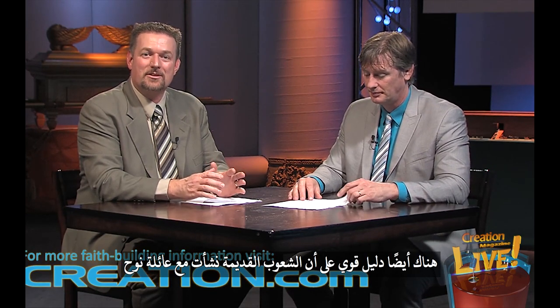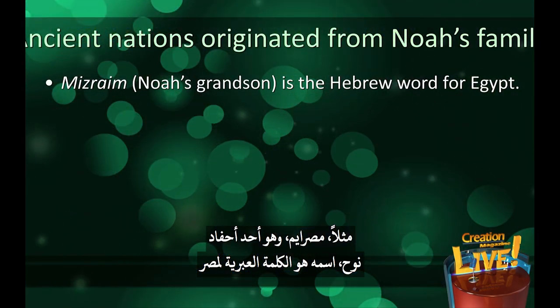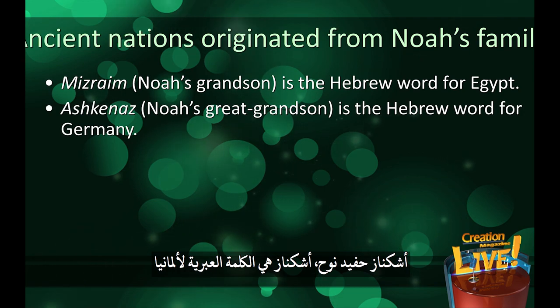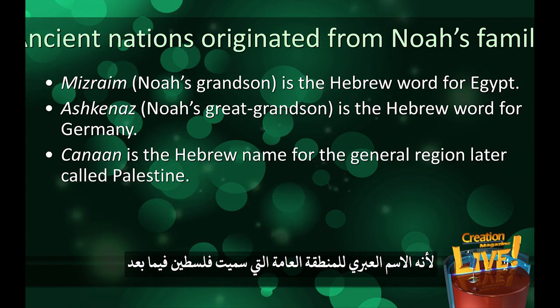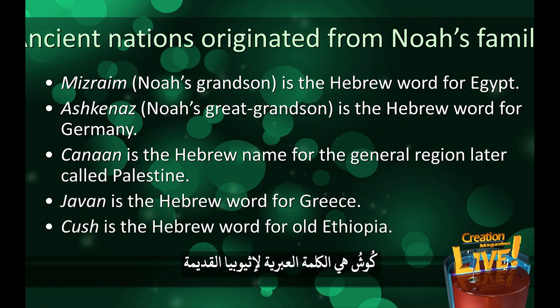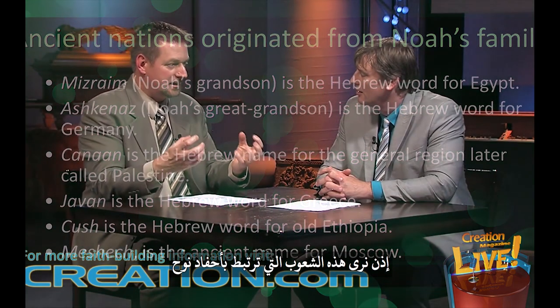There's also strong evidence that the ancient nations originated with Noah's family. Mizraim, one of Noah's grandsons, is the Hebrew word for Egypt. Ashkenaz, a great-grandson of Noah, is the Hebrew word for Germany. Other grandsons include Canaan — the Hebrew name for the region later called Palestine — Javan, the Hebrew word for Greece; Kush, the Hebrew word for Old Ethiopia; and Meshech, the ancient name for Moscow. You see these nations tied back to the grandsons of Noah.